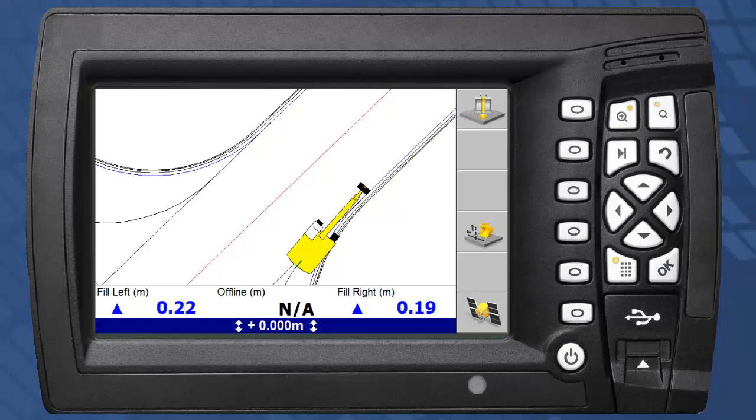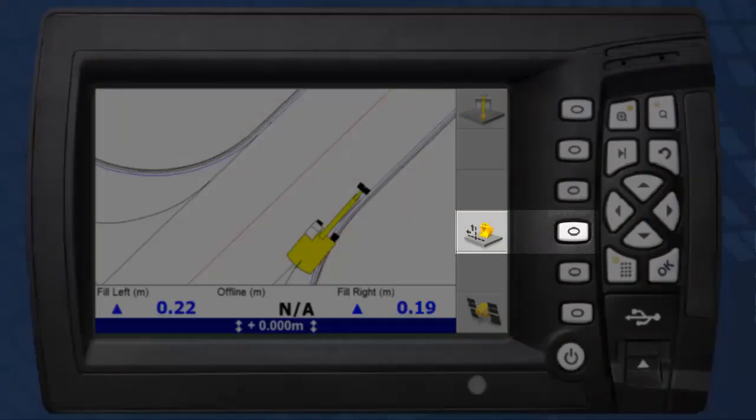Offset options can be accessed from the offset key, or from the configuration menu. Here we use the soft key shortcut.